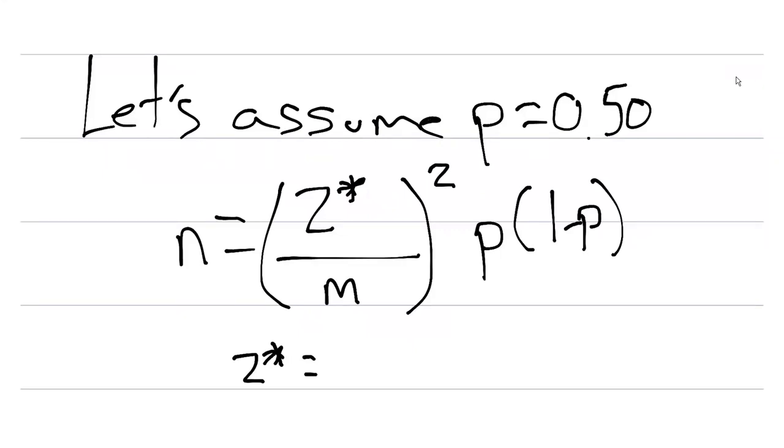The number of samples to collect N is going to equal Z star, and that's related to the confidence interval, divided by M, or our margin of error, squared, and then multiplied by P times 1 minus P.